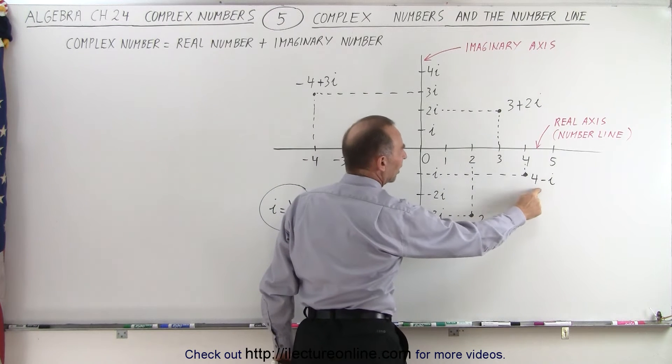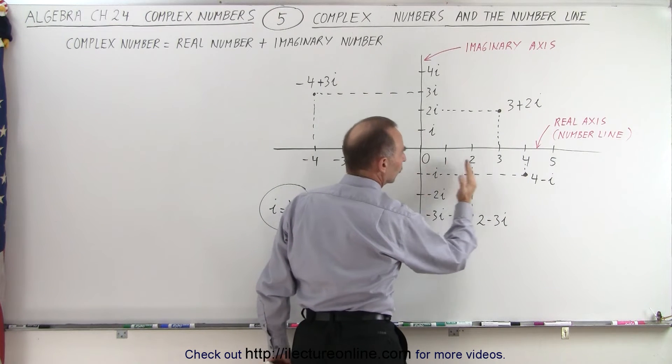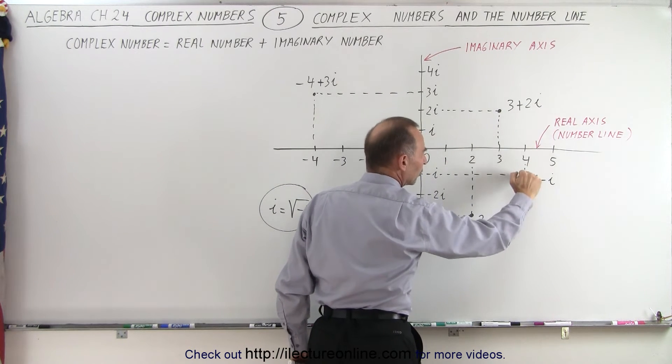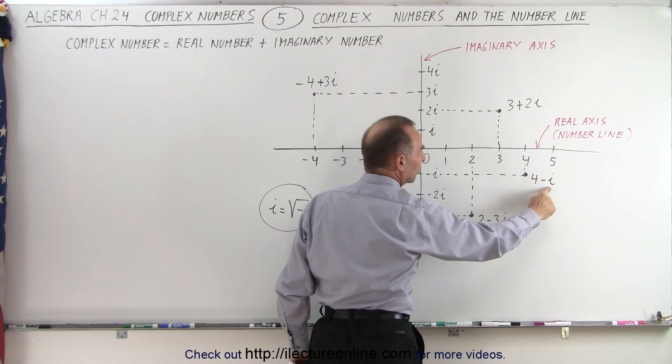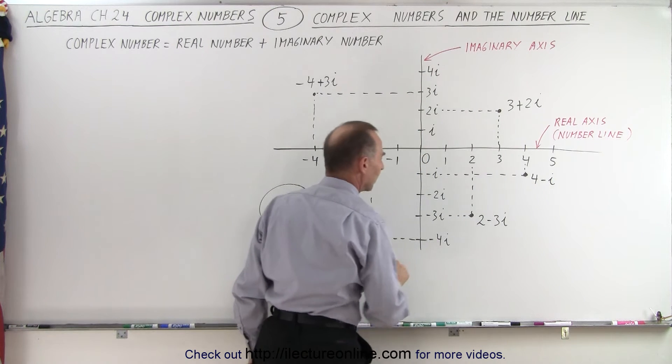4 minus i: you move 4 units to the right on the real axis, 1 unit down on the imaginary axis, and you have 4 minus 1i.